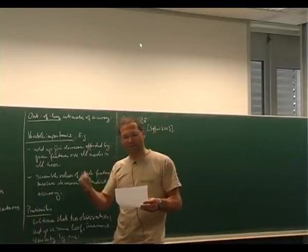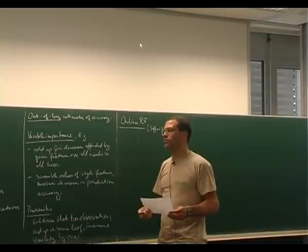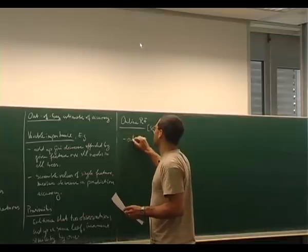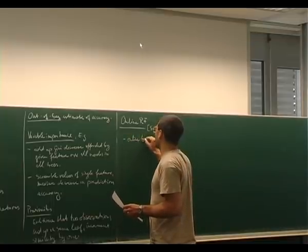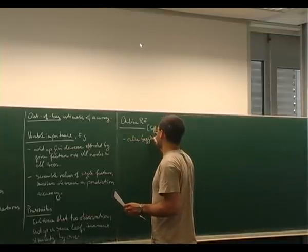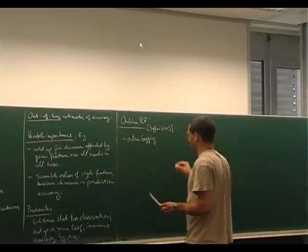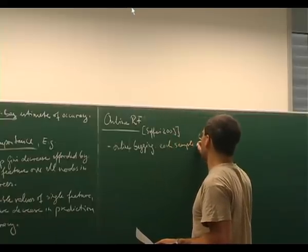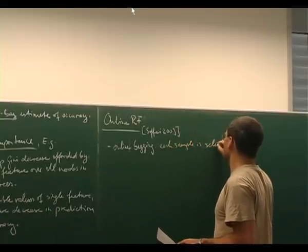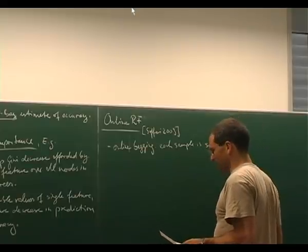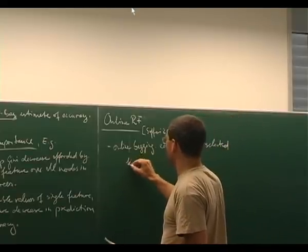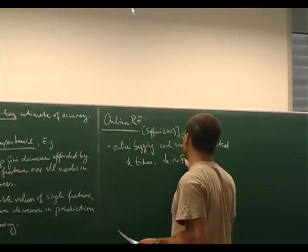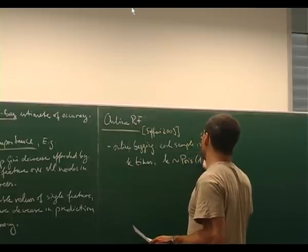So here we have a big stream of data coming in so that you cannot bootstrap sample from all of them. The idea in the online random forest is to use online bagging where each sample is selected k times with k following a Poisson distribution with parameter 1.